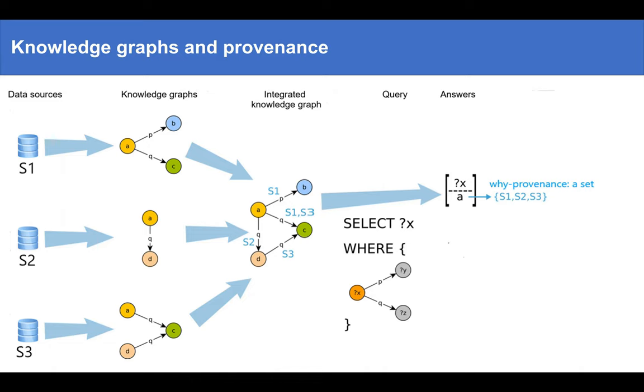However, a set does not provide information about how the elements are combined to generate an answer. A more expressive formalism for provenance is called how provenance. It consists of annotating answers with polynomials whose variables are the elements that contribute to the answers.